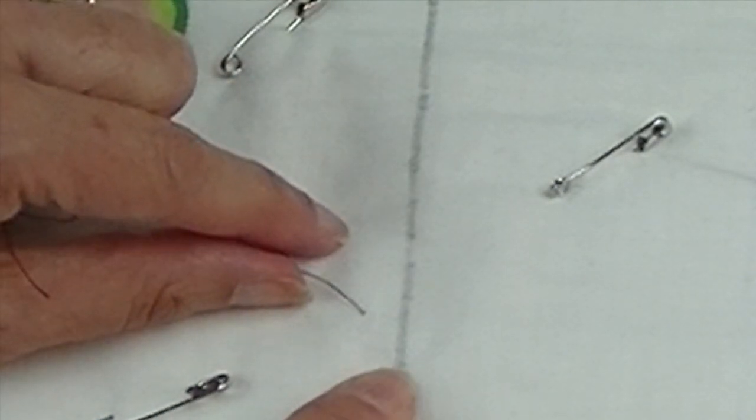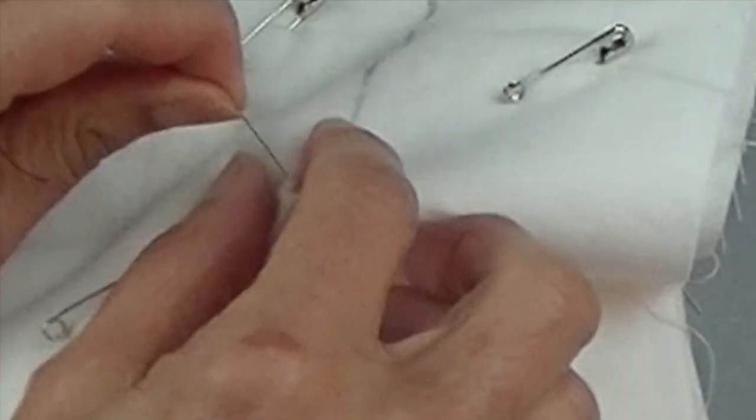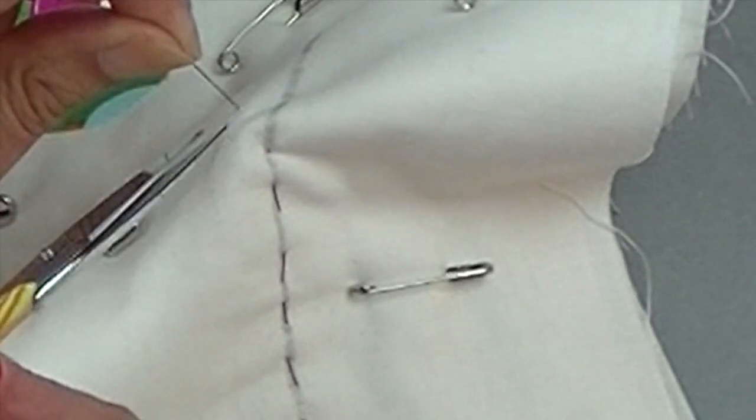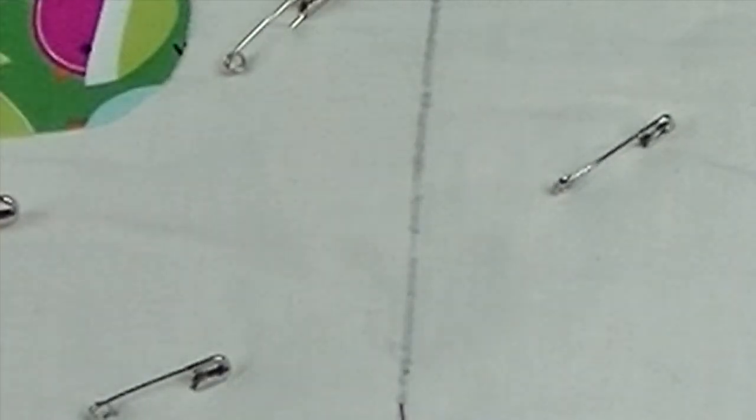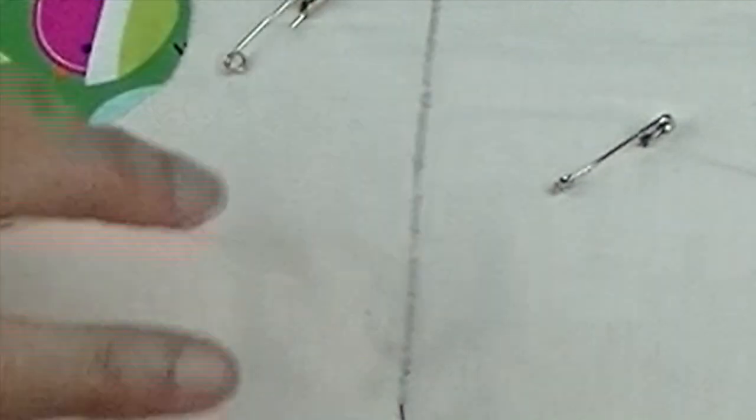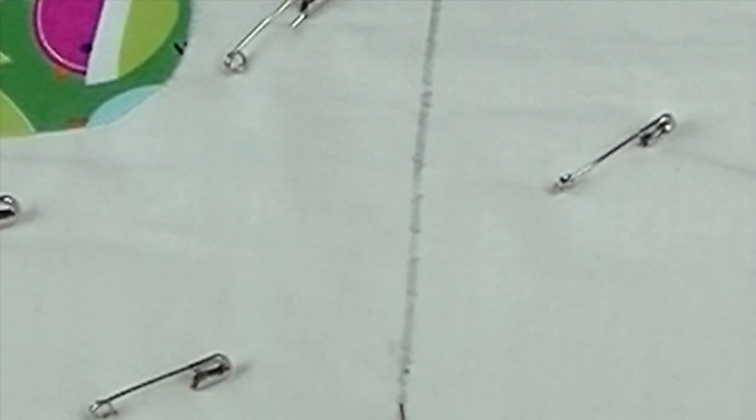It's knotted right underneath there. I don't want this tail showing. So I'll clip that and I've hidden my knot. My knots are now buried between those layers.